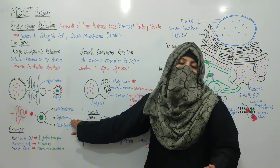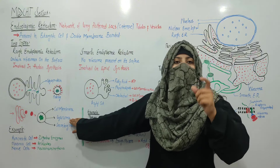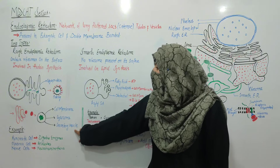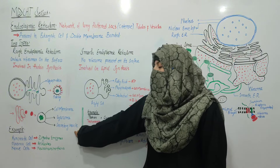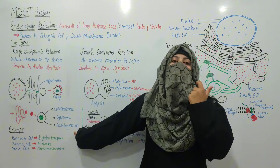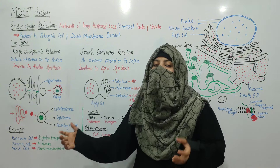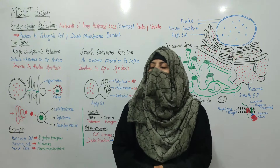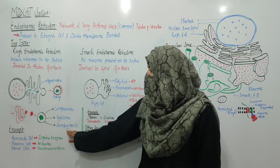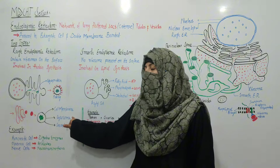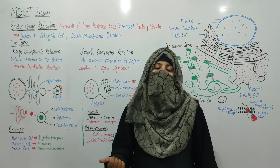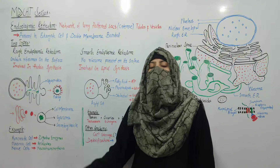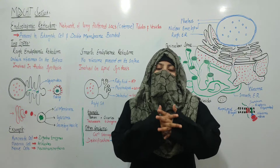Or the protein will be converted into lysosomes — lysosomes are organelles we will discuss later in lectures. After that, proteins can be converted into secretory vesicles. These vesicles move via exocytosis and the protein is moved out of the cell — secreted from the cell.